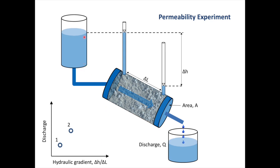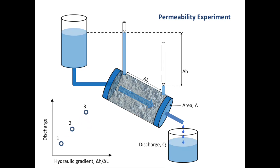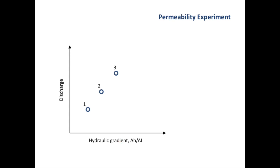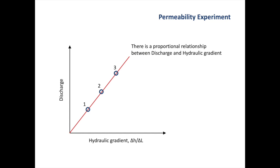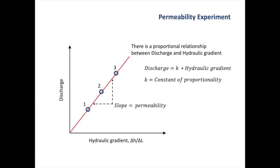We've increased our hydraulic gradient even more and the discharge through our cylinder has increased to a maximum. If we plot that point, you'll see that all three points appear to plot on a straight line. The straight line means there's a proportional relationship between discharge and the hydraulic gradient. We can express this as a formula: discharge equals k times hydraulic gradient. The k is the constant of proportionality — it is the slope of our straight line and also the permeability of the material.